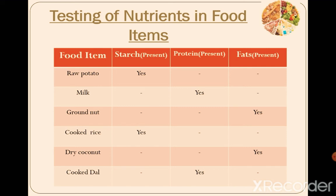Milk has no starch, but it contains protein. Ground nuts similarly contain fats. Cooked rice contains starch. Dry coconut contains fat. And cooked dal contains protein.